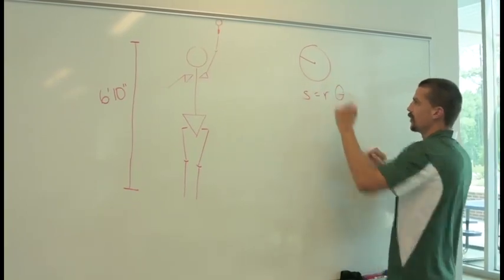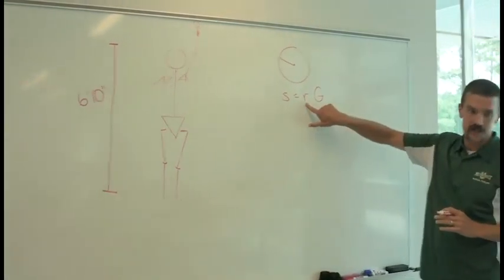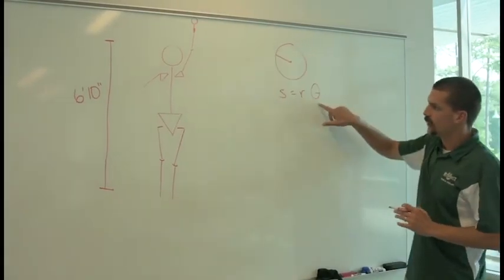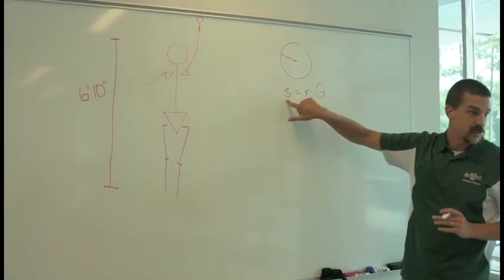s equals r theta. So r is your radius, the length of the radius. You multiply that by the angle that it travels through, that gives you a certain distance, right?